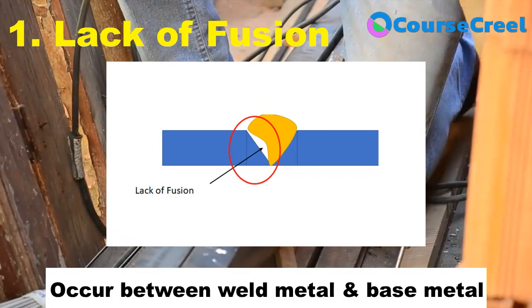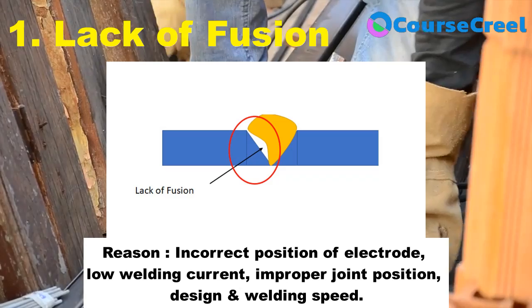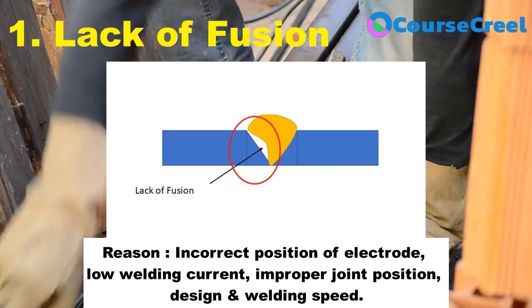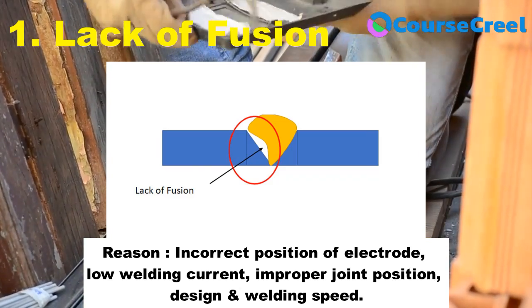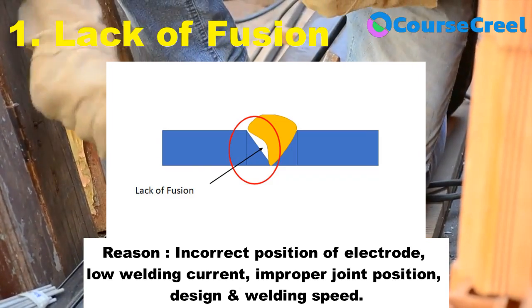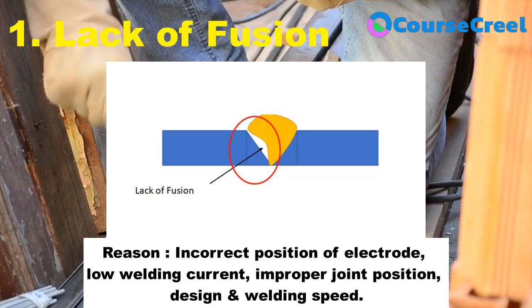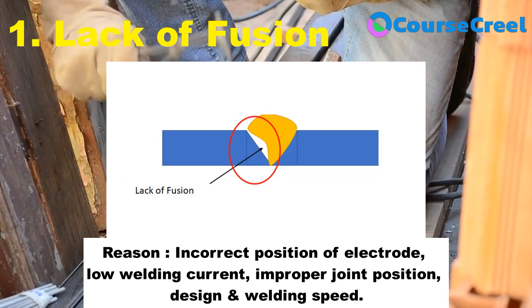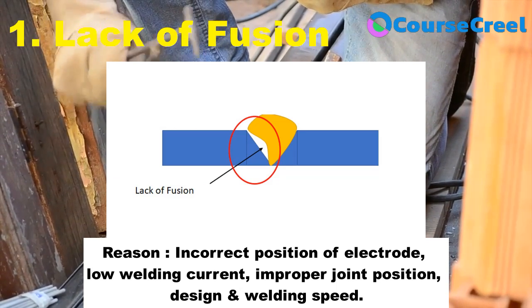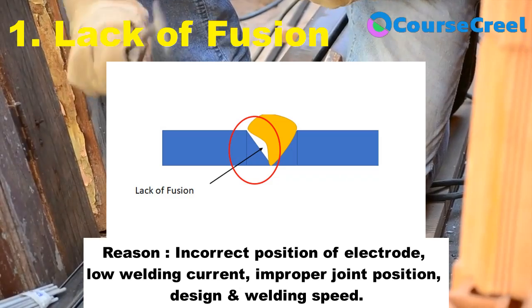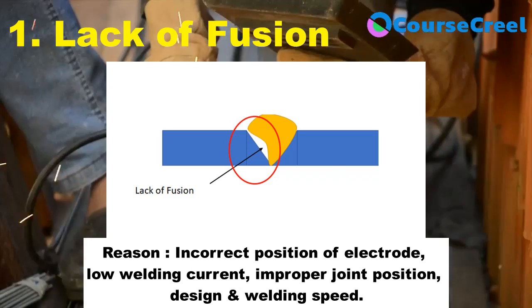The main reasons for lack of fusion are incorrect position of electrode, low melting current, improper joint positions, improper design, and improper welding speed. These are the main causes of lack of fusion, and we need to take care of these points while welding.